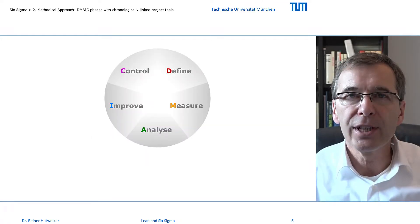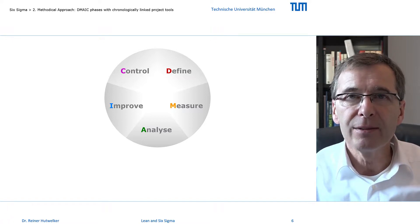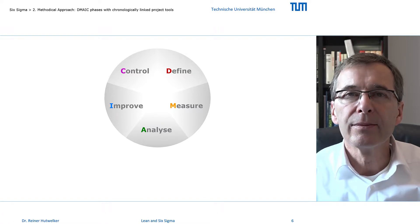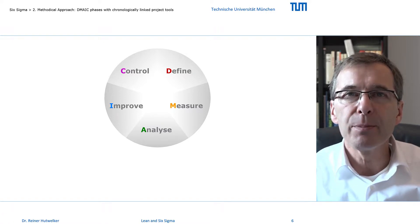Each Six Sigma project follows the phases of the DMAIC cycle, like in a screenplay. The sequence of these phases determines the dramaturgy, and the tools in each phase determine the scenes of the plot.